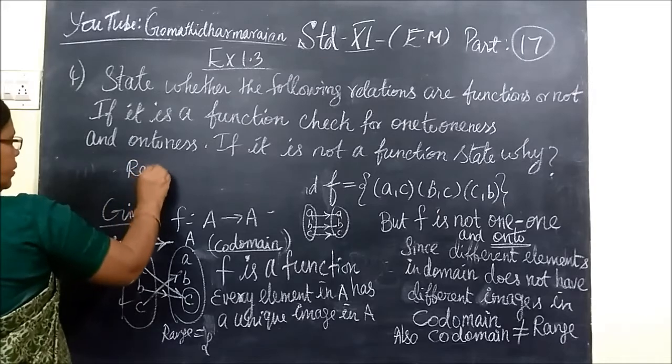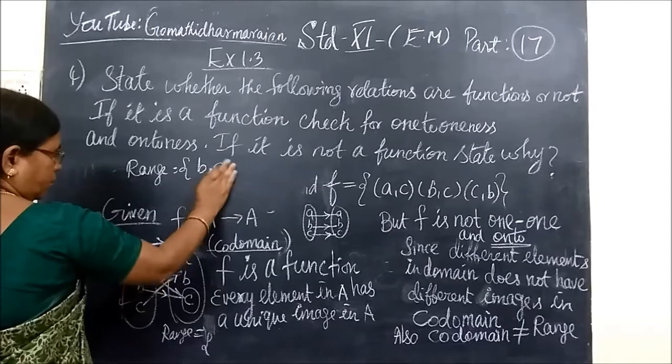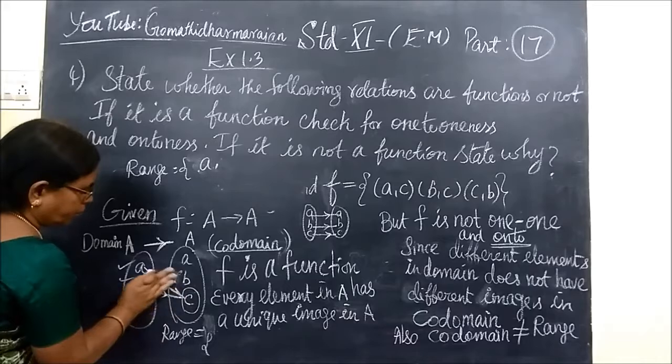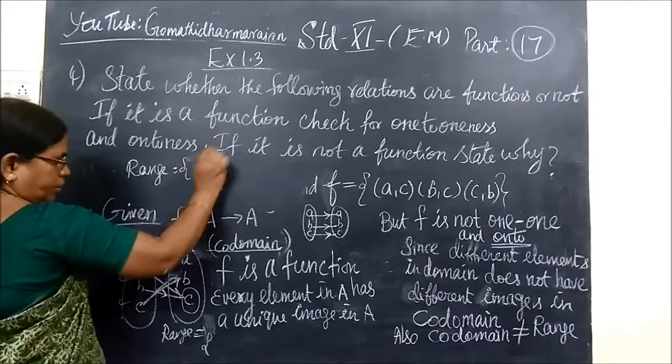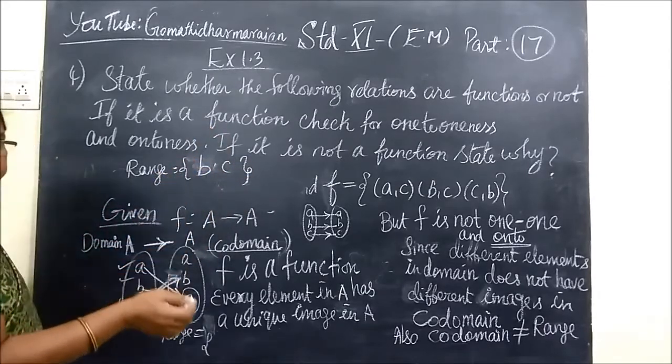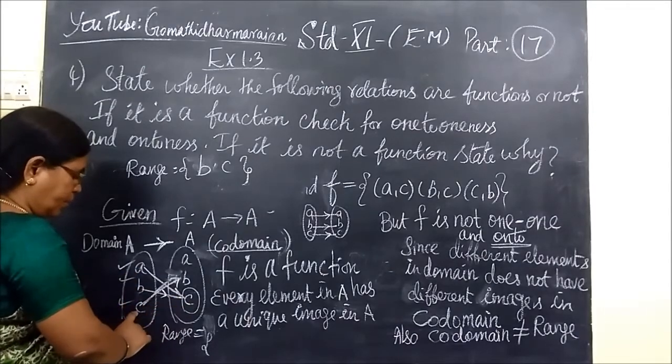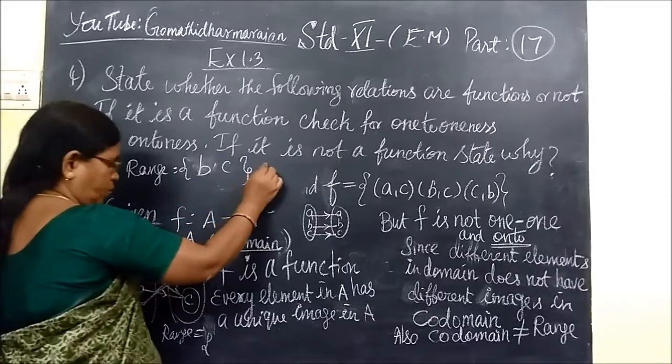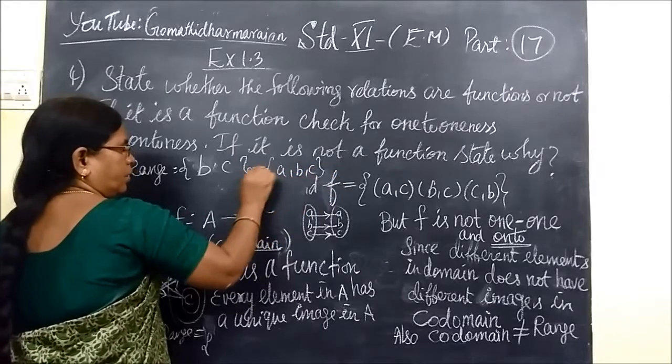Range is equal to B, C only. Because image of A is C, image of B is C, image of C is B. So the range will be B, C. But codomain is A, B, C. They are not equal.